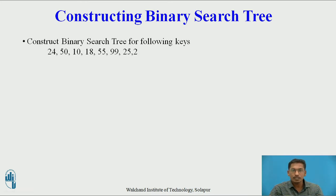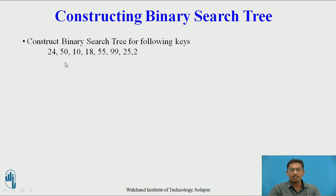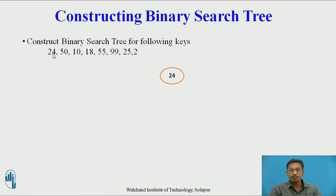Now we will see how to construct a binary search tree from the given keys. Suppose we are given these keys: 24, 50, 10, 18, 55, 99, 25, and 2. The first key is 24. Since 24 is the first node, it becomes the root.